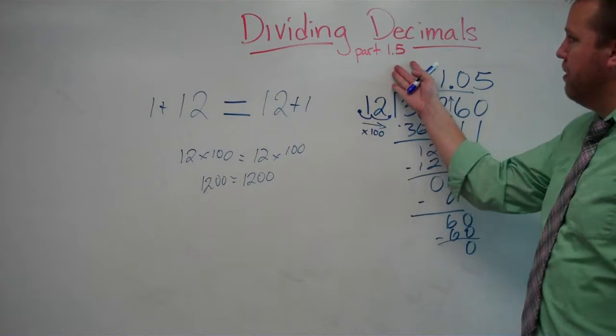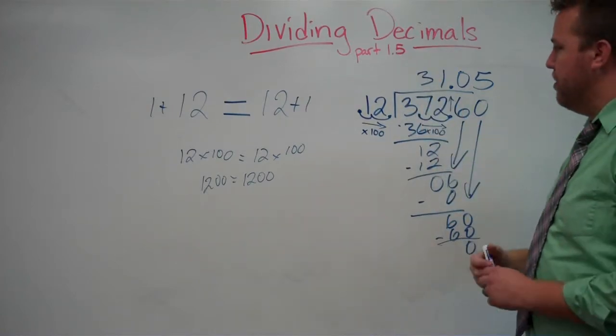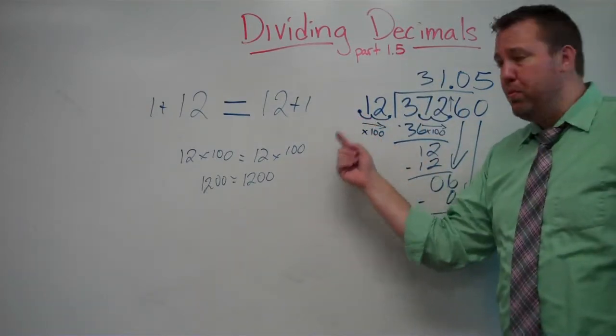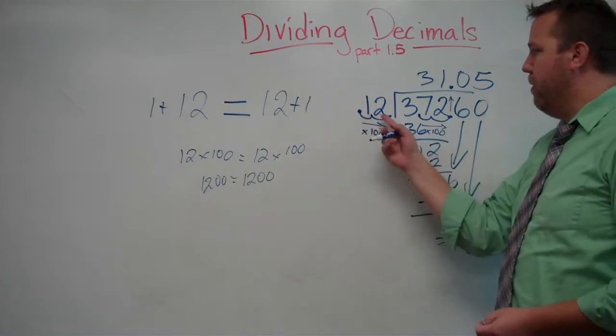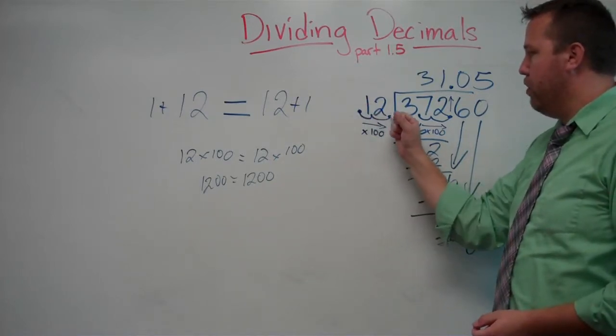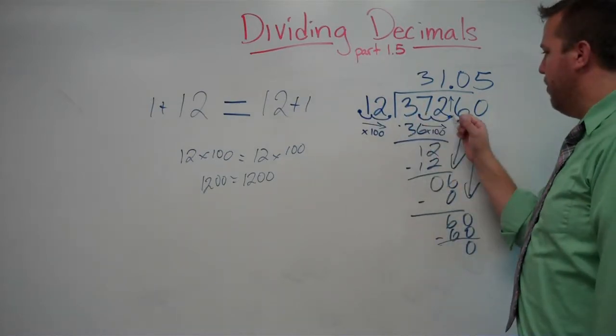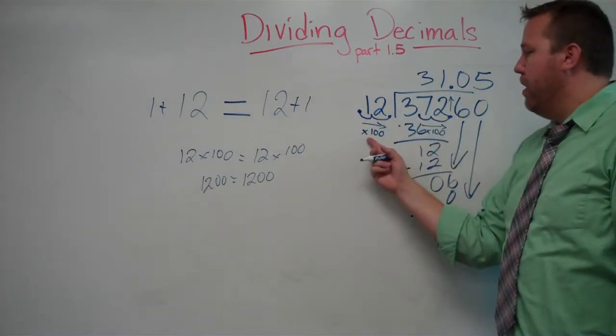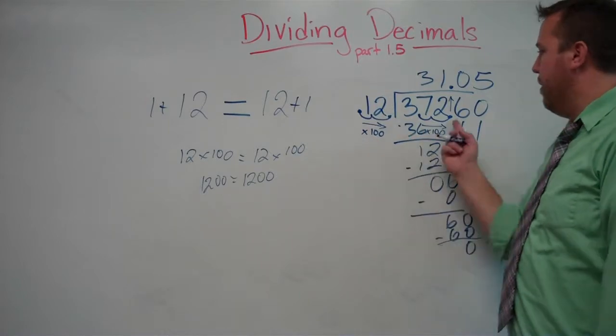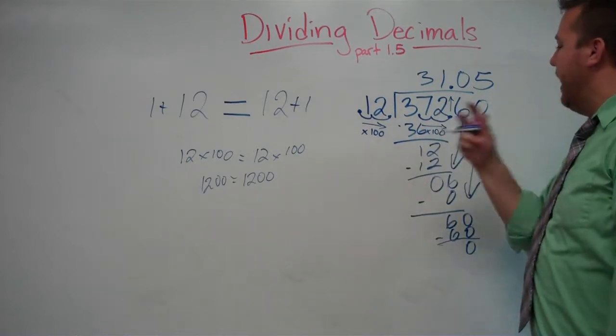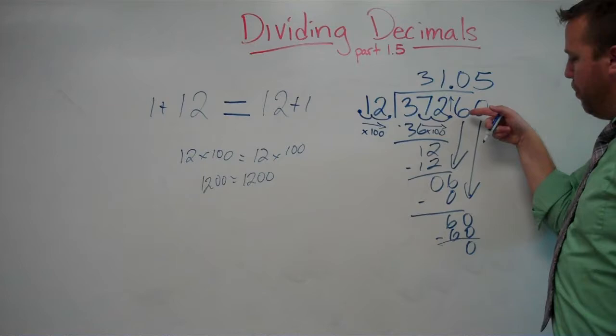Anyway, so the biggest part to remembering dividing decimals is what to do with that decimal. If you move it from the divisor, if I move it over twice, I've got to do the same thing in the dividend. Move it over twice. If, and then bring it straight up.